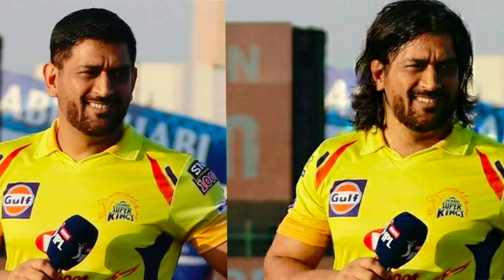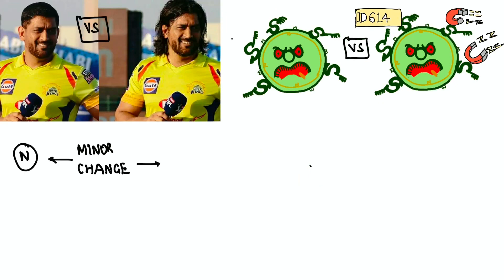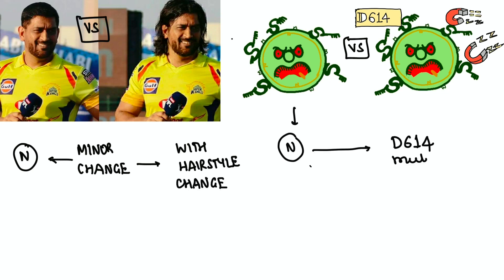Let's explain this with an example. Look at this picture — can you identify who this is? It's our captain, MS Dhoni. Comparing this to a mutated COVID virus: if you see what changed, it's just a minor change — just the hairstyle. Same thing: some minor mutations can happen with the COVID virus.